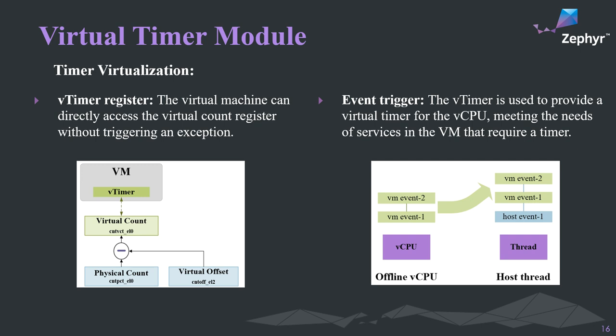For real-time applications, we need to provide timer services. ARM hardware provides a set of virtual machine-oriented registers that can be directly accessed by the VM without emulation. However, this access must ensure the current VM occupies the physical CPU. If the CPU is preempted by another VM, it is necessary to use Zephyr's timer-out mechanism to add the VM's time trigger event to the host events, triggered when the thread is scheduled.